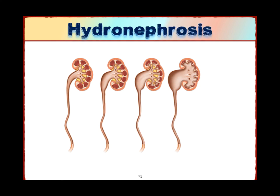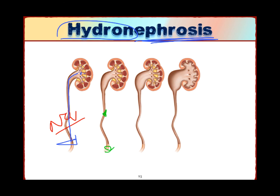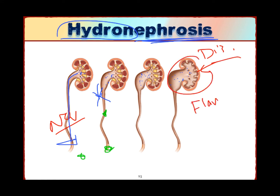The last condition is hydronephrosis. 'Hydro' means water and 'nephrosis' refers to kidney inflammation. Normally, urine is formed and leaves the kidneys through the ureters out of the body. But if there is an obstruction — in the ureters, bladder, or urethra — the urine being formed cannot pass through and will continue to accumulate. The more it accumulates, the worse the situation. The kidneys will become distended, causing severe flank pain.